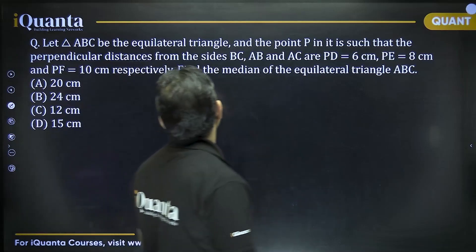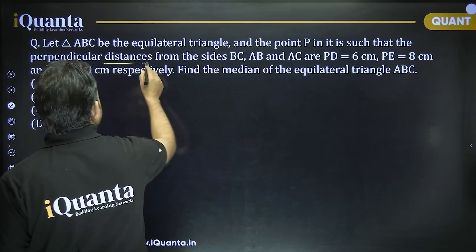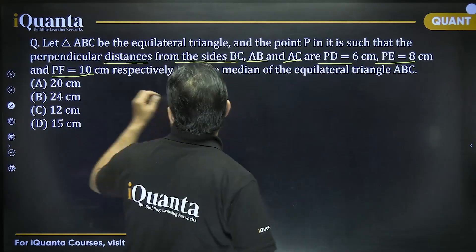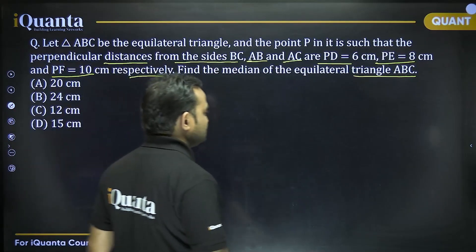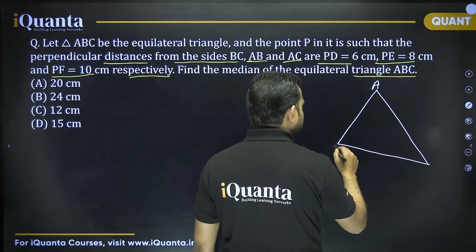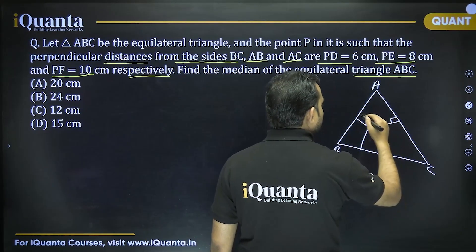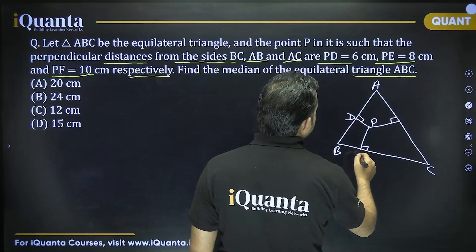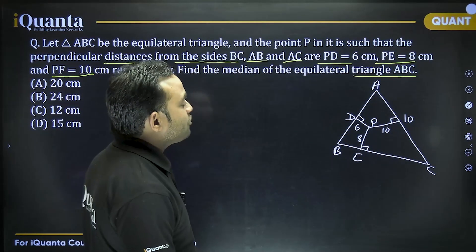Next question: triangle ABC is equilateral and point P inside it has perpendicular distances PD, PE, and PF to sides BC, AB, and AC equal to 6, 8, and 10 cm respectively. Find the median of the equilateral triangle.